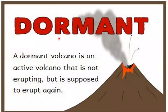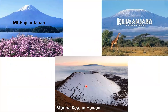A dormant volcano, also called a sleeping volcano, is an active volcano that is not currently erupting but is supposed to erupt again at any time. Mount Fujiyama in Japan, Kilimanjaro, and Mauna Kea in Hawaii are examples of dormant volcanoes.